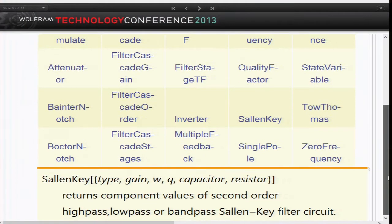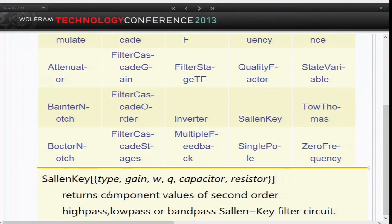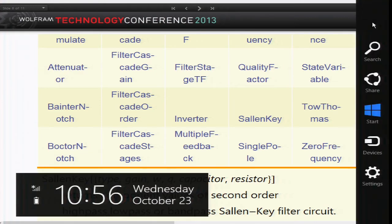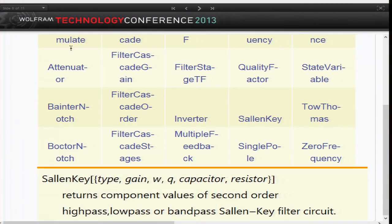Each filter topology has its function. Let's click on Sallen-Key. We would enter the type of system we need, the gain, pole frequency, Q factor, and we would pick a capacitor and resistor. This filter would return the components of the rest of the circuit.